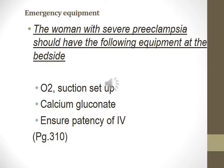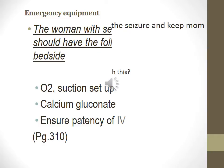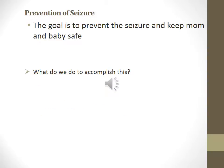Emergency equipment: the woman with severe preeclampsia should have the following at the bedside at all times — O2, suction setup, calcium gluconate, and a patent IV. This information is found in your textbook on page 310. Our goal for mom is prevention of seizures and keeping mom and baby safe. To accomplish this: keep blood pressure down, maintain a quiet and calm environment, provide constant and ongoing assessment, assess the mag sulfate drip, assess for signs and symptoms of toxicity, keep safety equipment at the bedside, call light within reach, and emergency birth pack at the bedside.